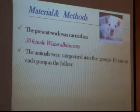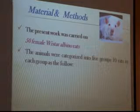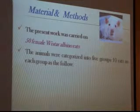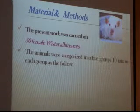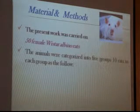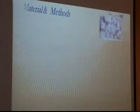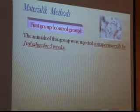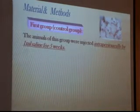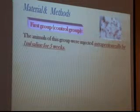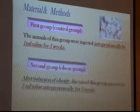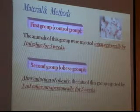The present work was carried out on 50 female Wistar Albino rats. The animals were categorized into 5 groups, 10 rats in each group. The first group was the control group; animals of this group were injected intraperitoneally with saline for 5 weeks.